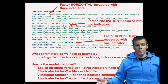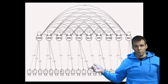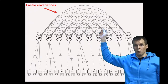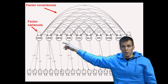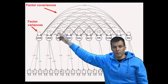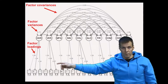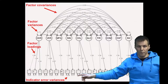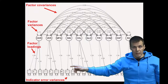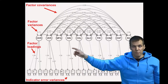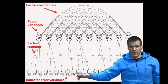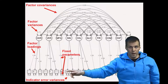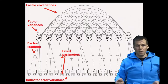As a path diagram, the result looks like this. We have factor covariances shown as curved arrows between factors, factor variances as curved arrows that start and return to the same factor, factor loadings as straight arrows from factors to indicators, and indicator error variances as curved arrows on the indicators. Dashed arrows indicate constrained parameters — the first indicator loading fixed to one, and single-indicator error variances constrained to zero.